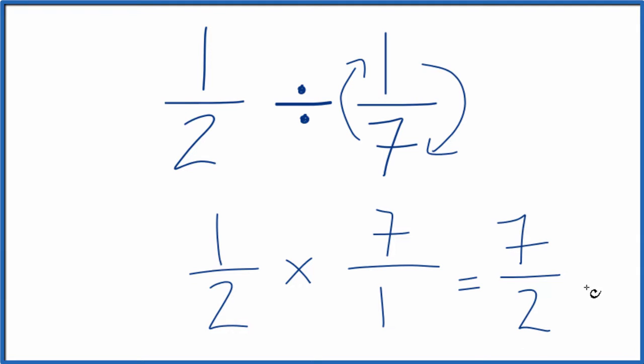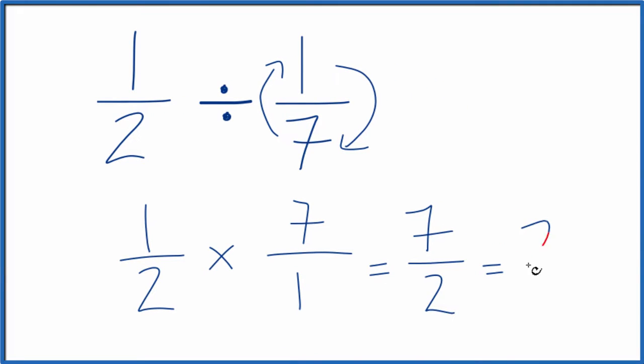This is an improper fraction. You might want to get it to a mixed number. So 2 goes into 7. 2 times 3 is 6. So 3 times with 1 left over, so we call it 3 and a half.